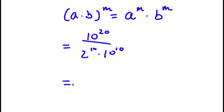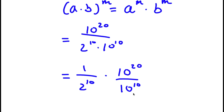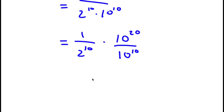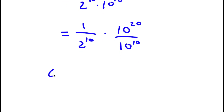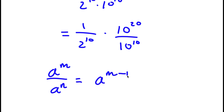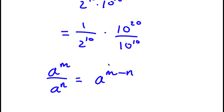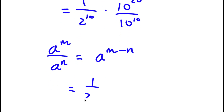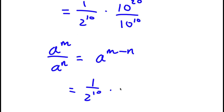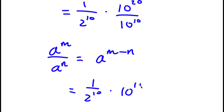Now this is the same thing as 1 over 2 to the power of 10, times 10 to the power of 20 over 10 to the power of 10. And if I have something in the form a to the power of m over a to the power of n, this is simply equal to a to the power of m minus n. So 10 to the power of 20 over 10 to the power of 10 is going to equal 10 to the power of 20 minus 10, which is simply 10 to the power of 10.